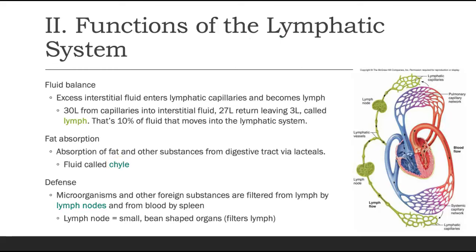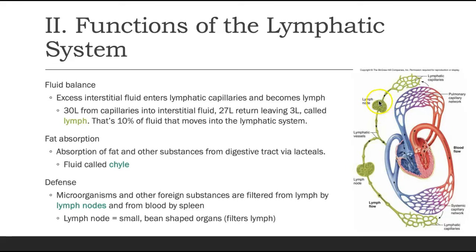The last function is defense. A key organ for this is our lymph node. Fluid moves into the lymphatic capillaries, travels through a vessel into the lymph node, where it comes into contact with microorganisms and foreign substances. The lymph node filters for pathogens and sounds the alarm for our immune system. Eventually the fluid moves through the lymphatic vessels into our venous system, which brings it back to the heart. Lymph nodes are small bean-shaped organs found throughout the body.